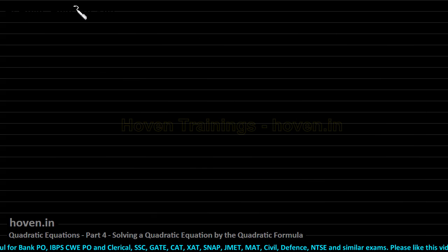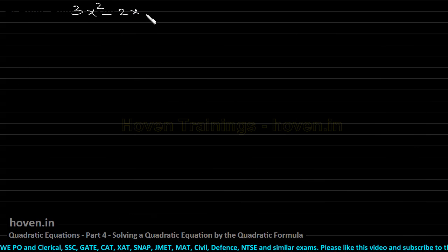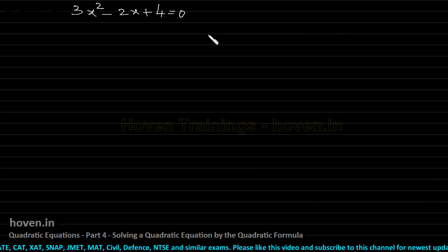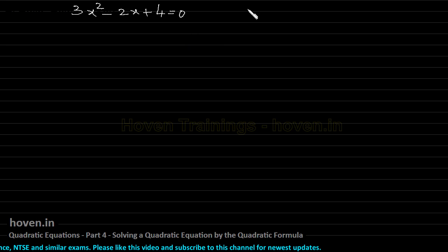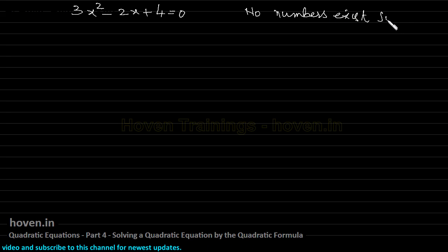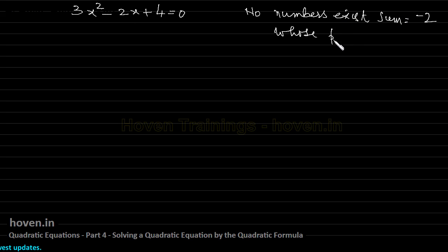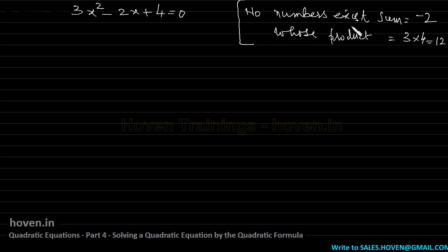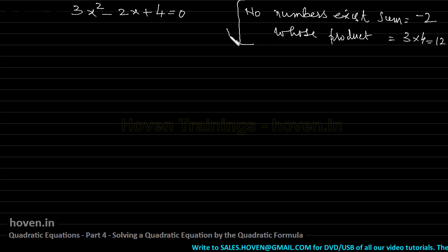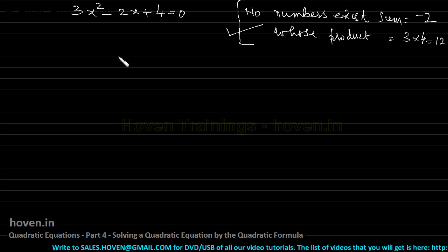Our next example: solve 3x² - 2x + 4 = 0. Believe me, this equation is impossible to solve by the shortcut method, because no numbers exist whose sum is equal to -2 (that is b) and whose product is 4 × 3 = 12. Since no such numbers exist, you cannot use the shortcut method and we must go by the longer method.